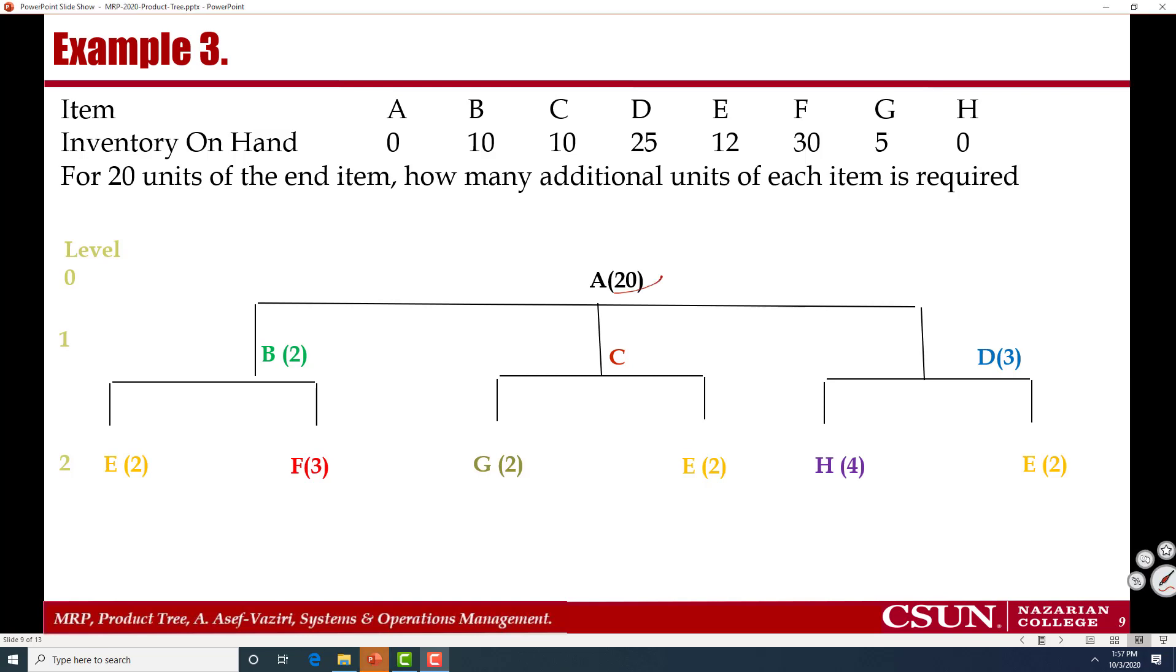We have a product A. We have the inventory of all the parts, raw material and components that are supposed to go into B. And also we have the requirements. For example, for each A we need 2B. And therefore if I need 20A, then I need 40B. For each A, I need 1C.